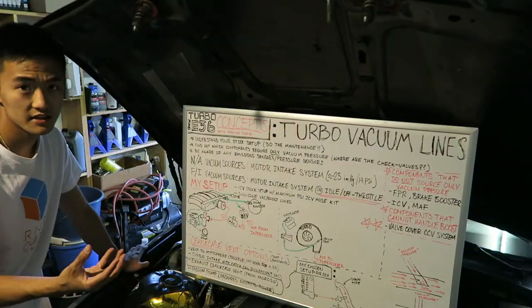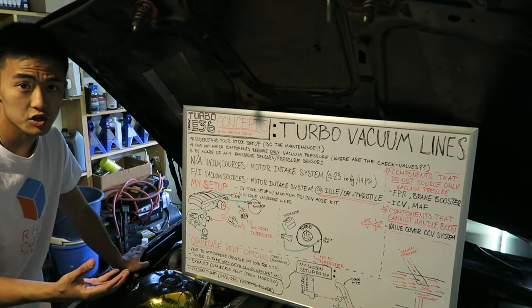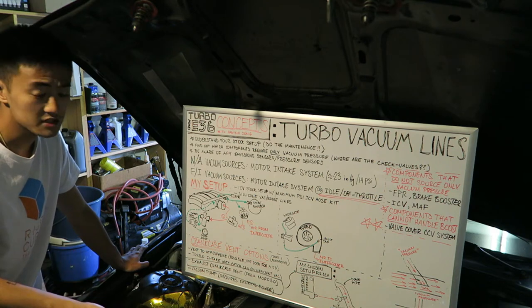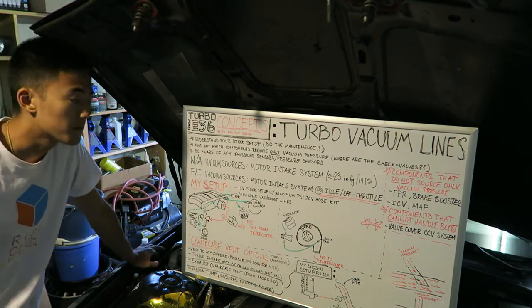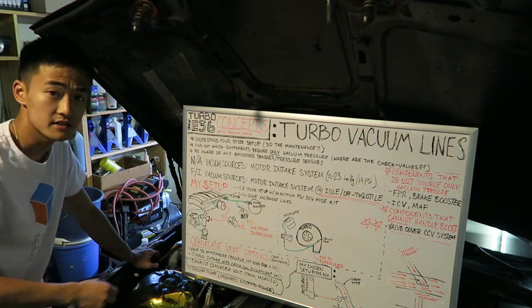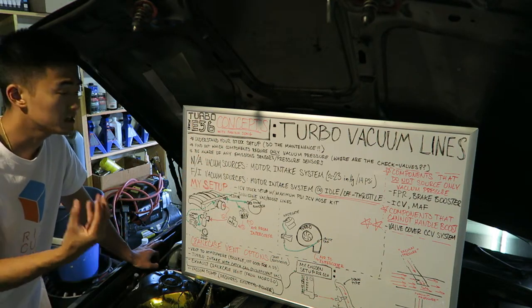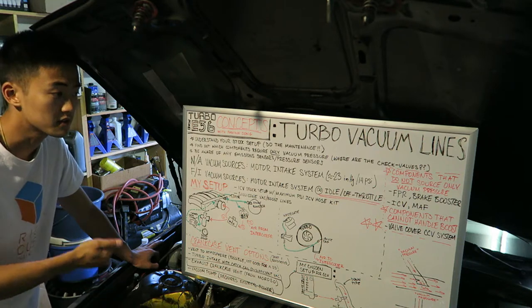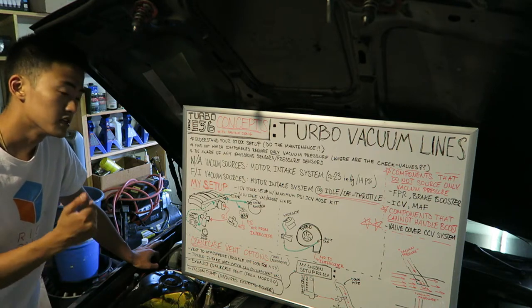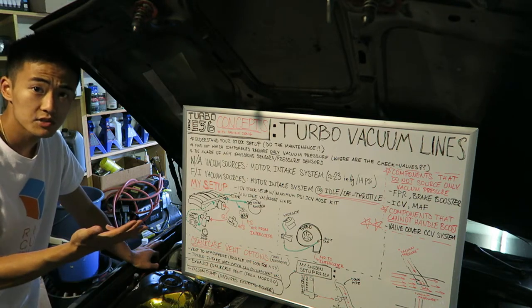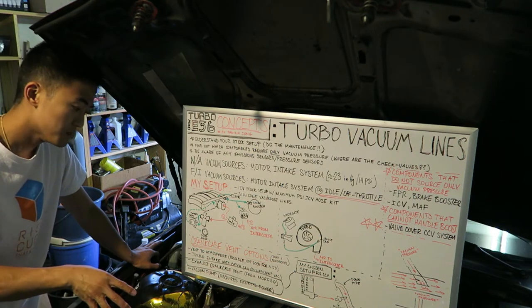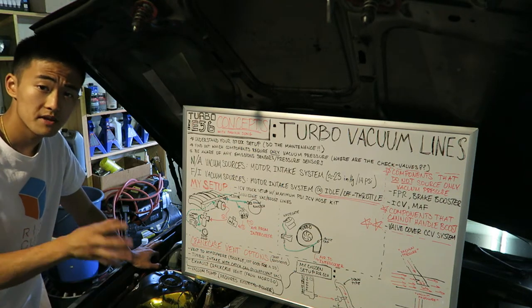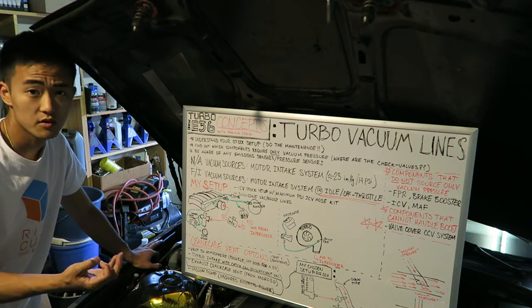If you want to understand a vacuum line setup in a turbocharged car, you really have to understand the stock setup. You want to be able to do all the maintenance and understand all the components that work within your system, which include the mass sensor, the idle control valve sensors, brake booster lines, all the little emissions and sensors that go around the motor. Some of those have vacuum lines.